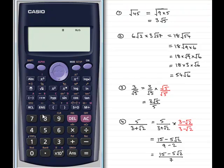And doing the first example then, the square root of 45 to simplify it, we'll type in 45 and then just press equals and you'll see you'll get 3 root 5.